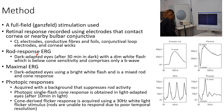Rod response ERG, that is scotopic ERG, is recorded in dark-adapted eyes after 30 minutes in the dark, with a dim white flash which is below cone sensitivity, and comprises only a B wave, as you can see in this picture. Maximal ERG is recorded in dark-adapted eyes using a bright white flash and is a mixed rod and cone response, as you can see in this picture.